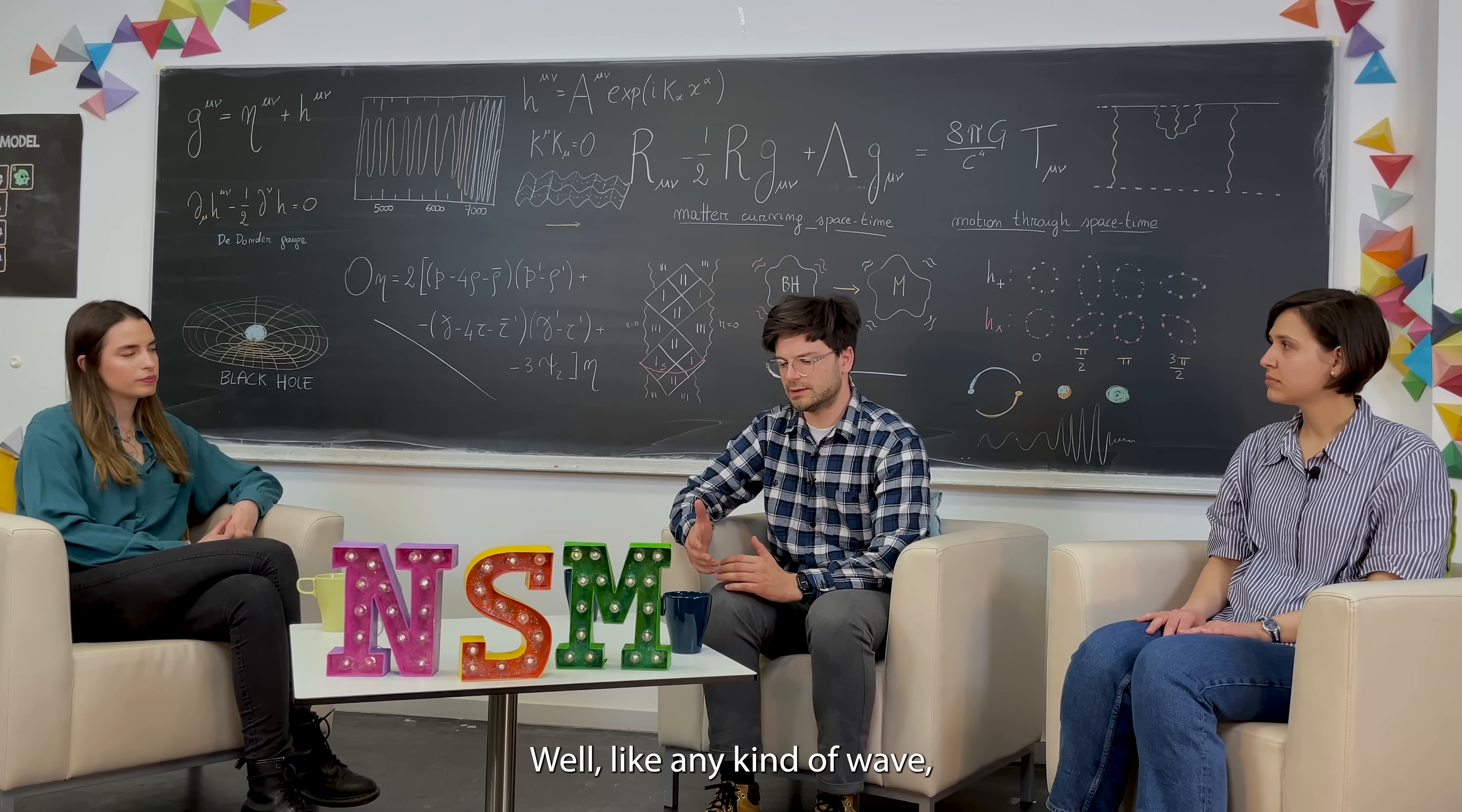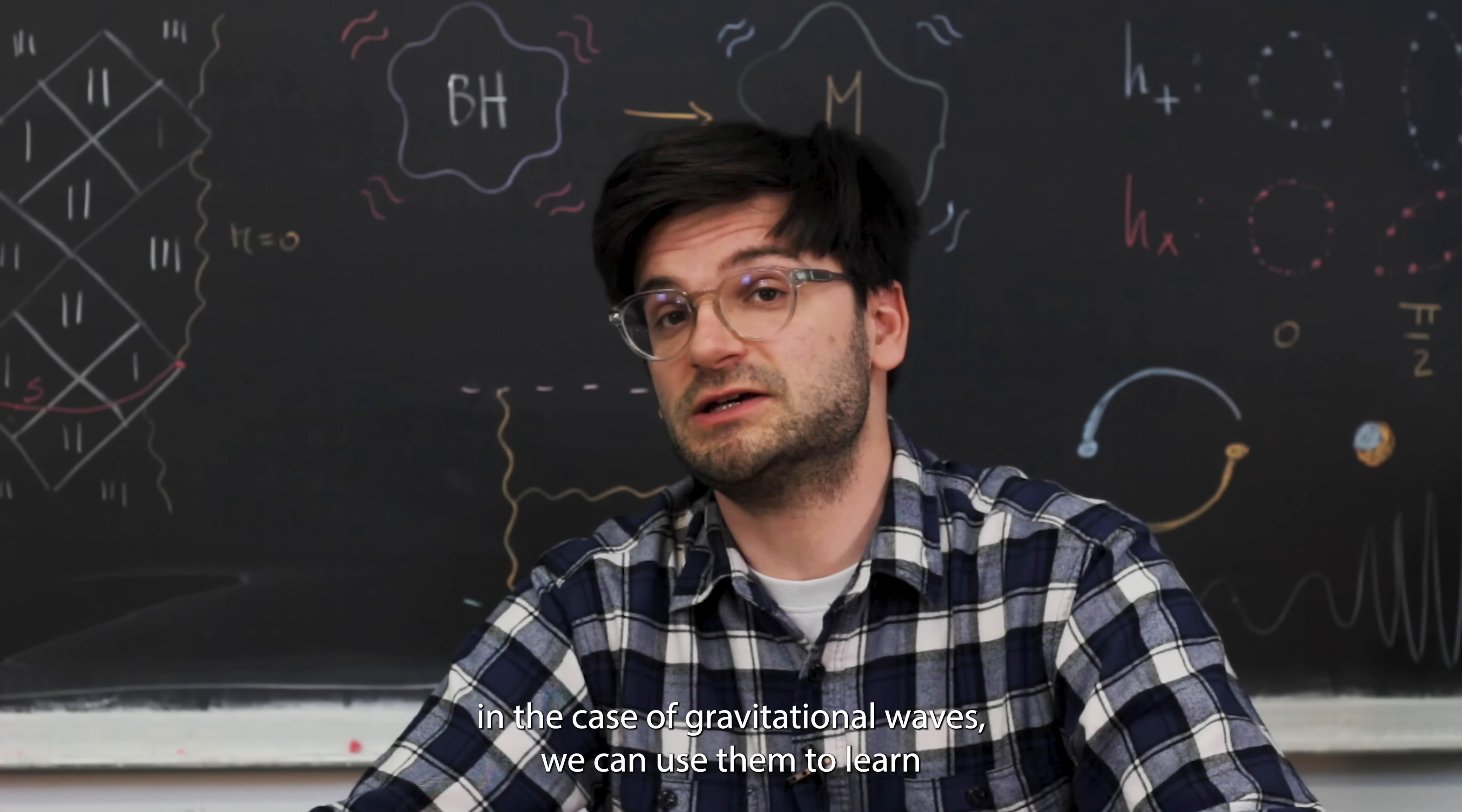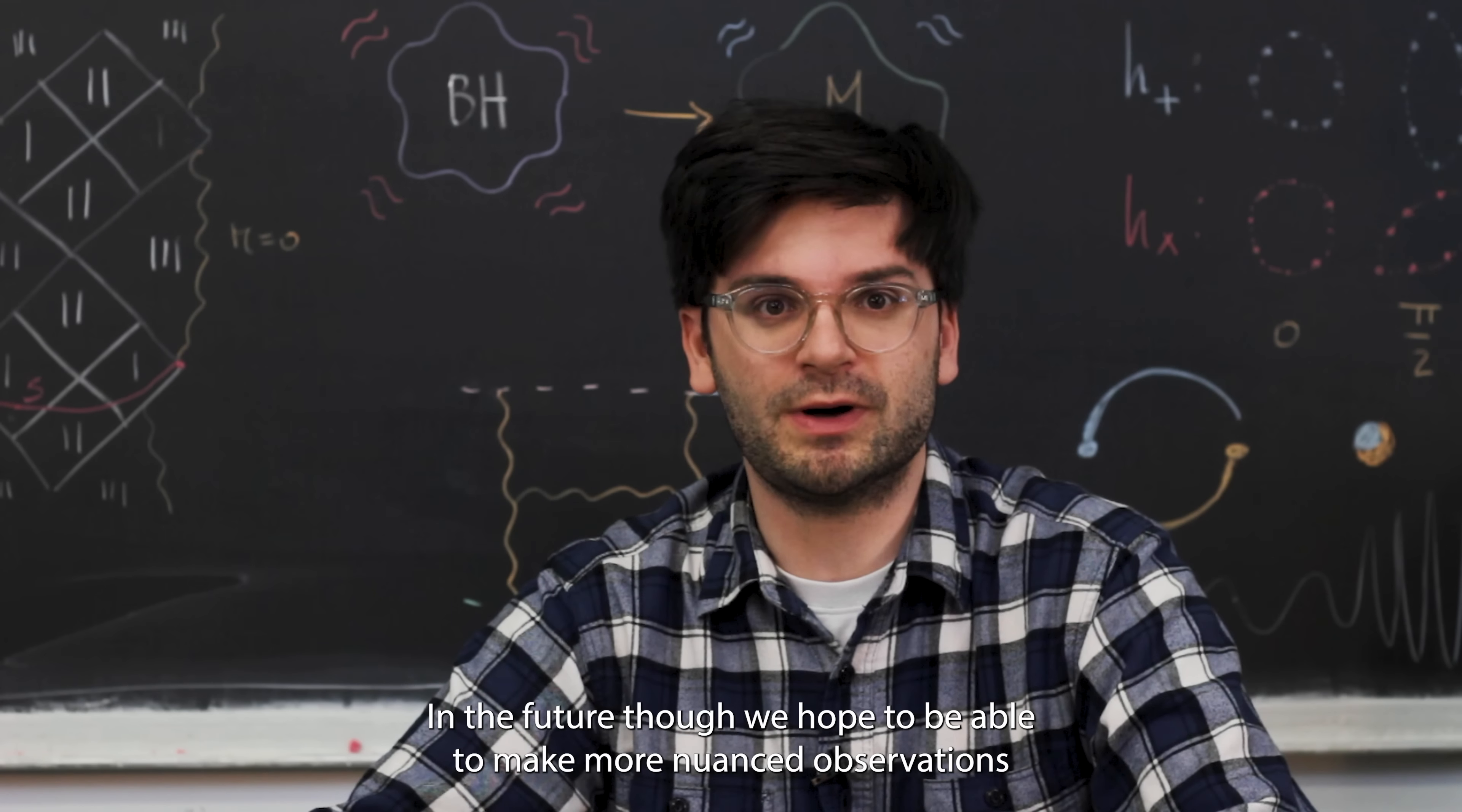So soon we will have more data and more detectors. But why is it important to detect gravitational waves from different sources, Gustav? Well, like any kind of wave, gravitational waves are characterized by three things: their strength, their frequency, and their speed, which in this case is the speed of light. Just like how we can use light to learn something about the world around us by observing it, in the case of gravitational waves, we can use them to learn about the sources that emitted them, the black holes and the neutron stars. For example, more massive black holes will give rise to lower frequency gravitational waves.